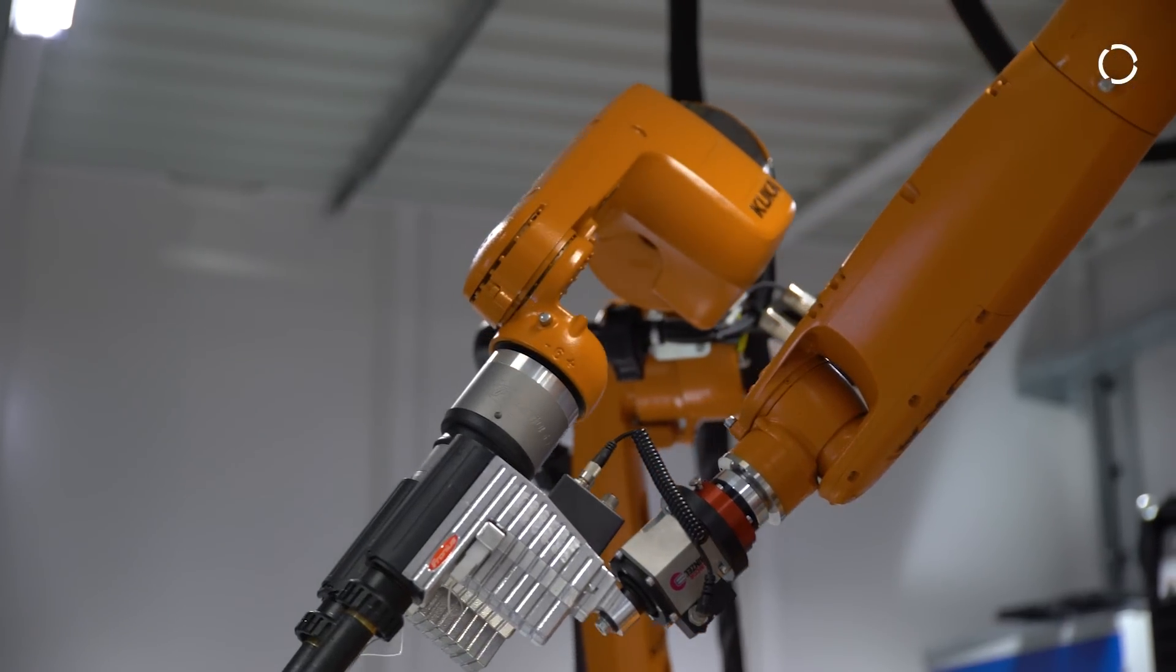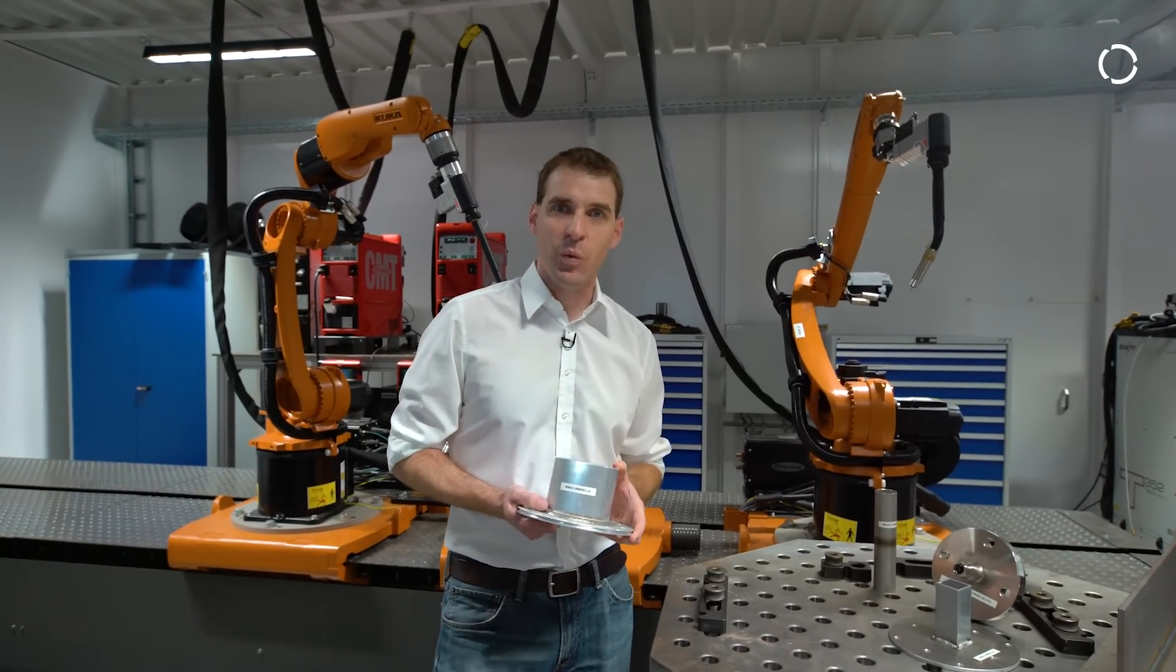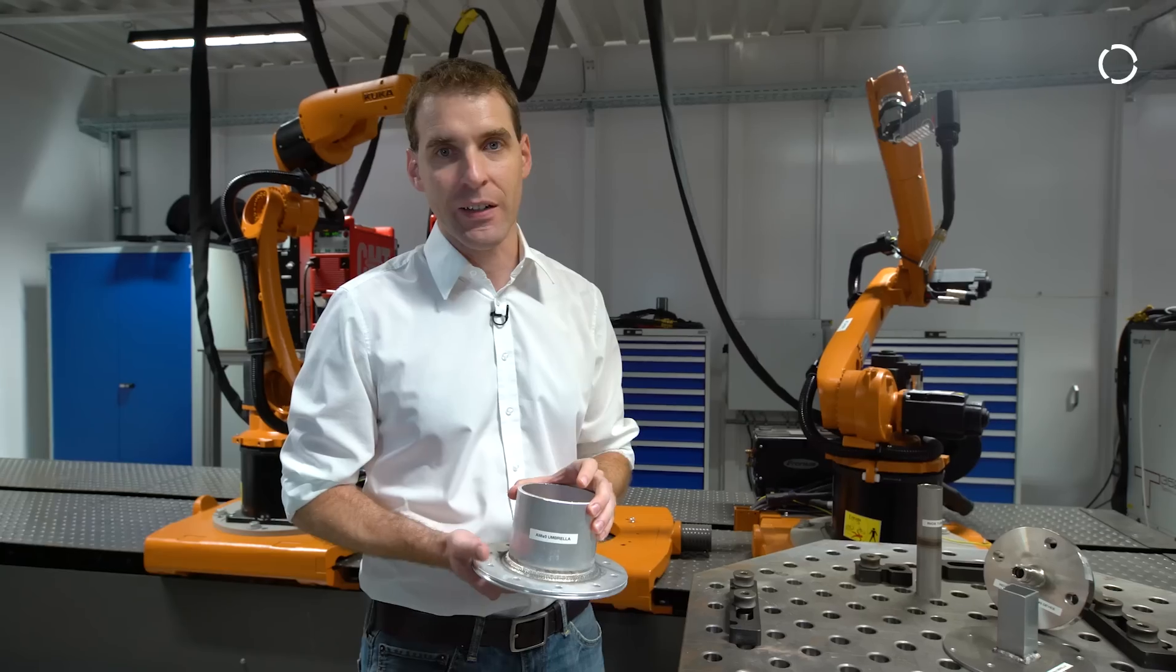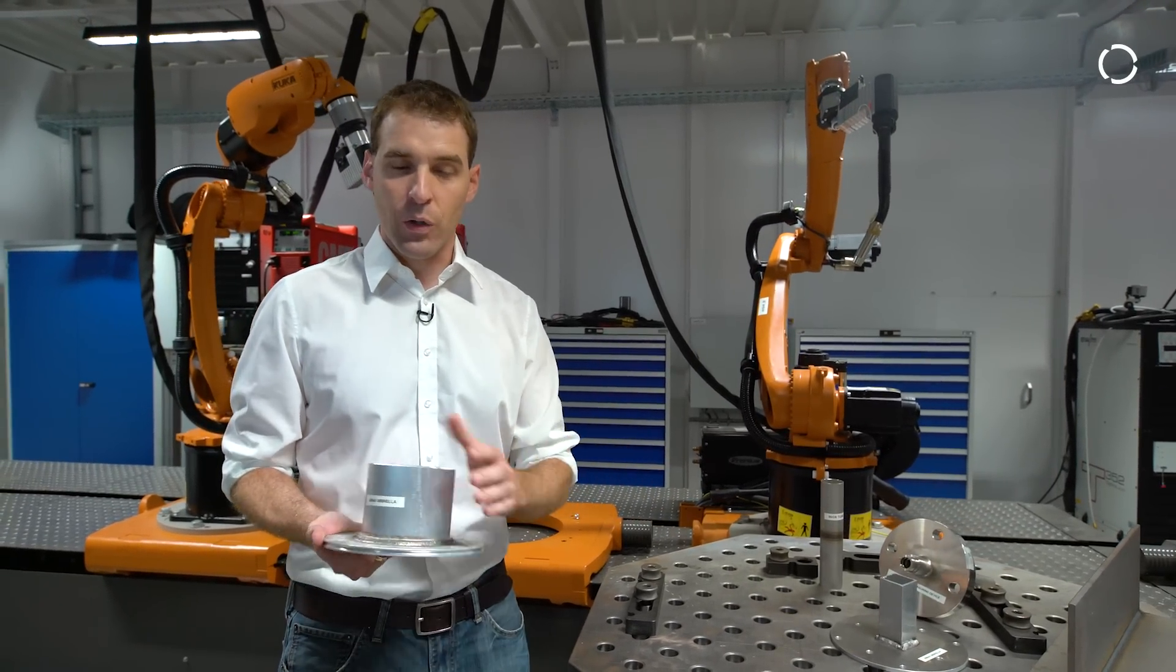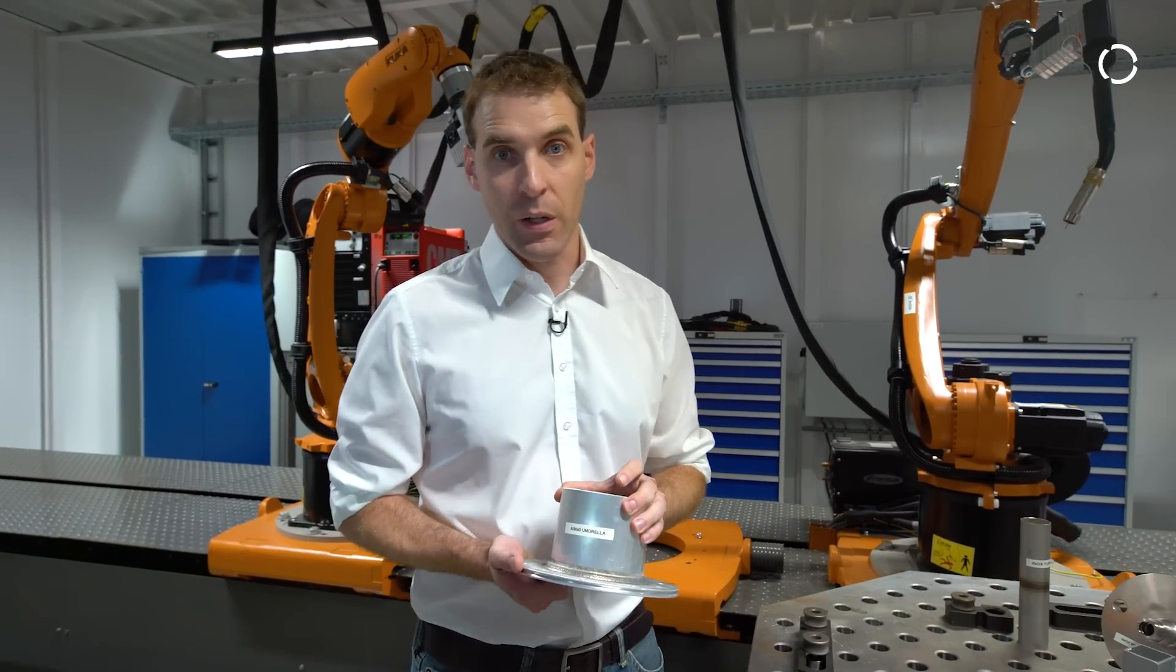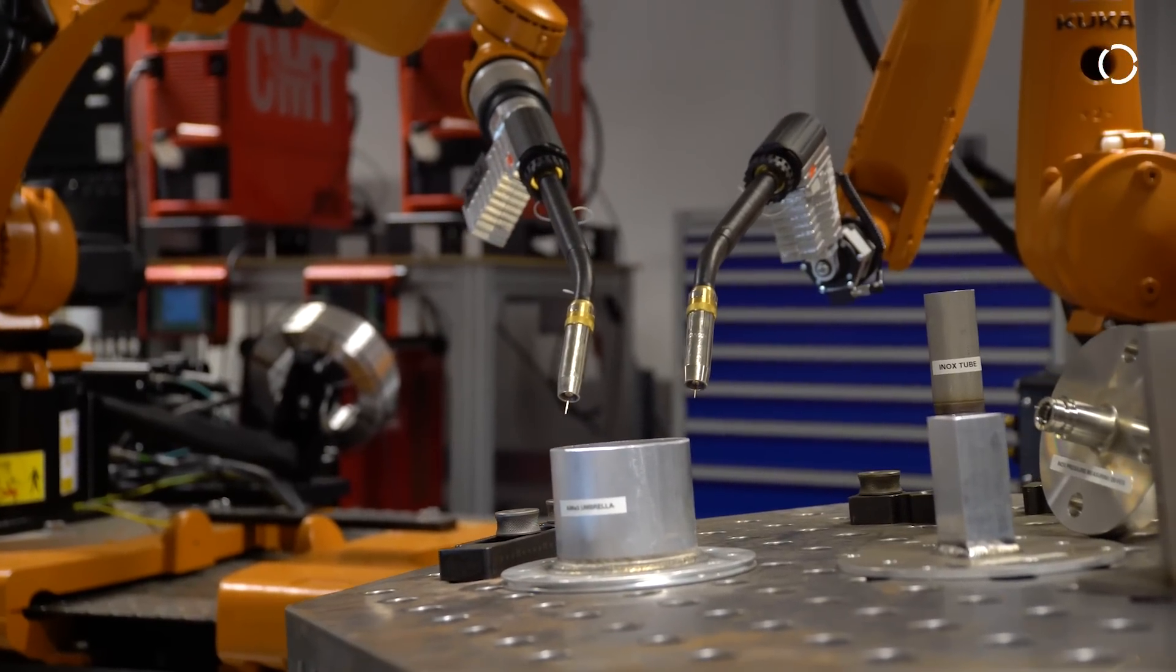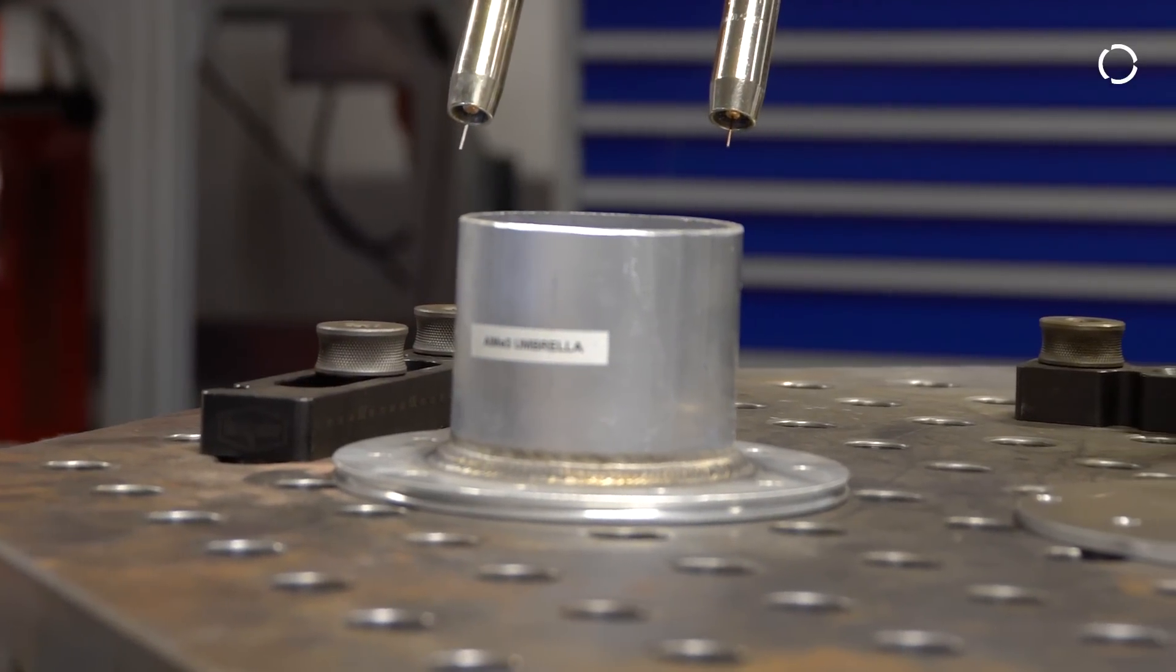On this station, we already had a successful customer demo. A customer came needing to weld these aluminum parts. This is a stand of a big sun umbrella, what you can find in our lovely Bavarian beer gardens. We solved the customer's problem, not only in robotic programming, but also in the welding parameters. With this successful application demo, the customer decided to go with the KUKA solution. This was our first big success right after the grand opening of the Tech Center.